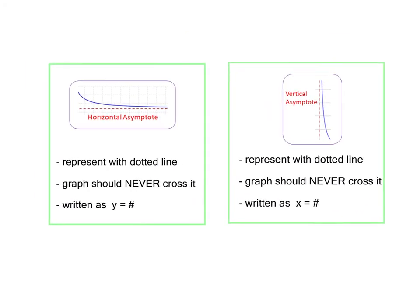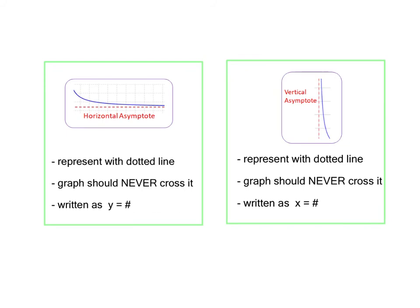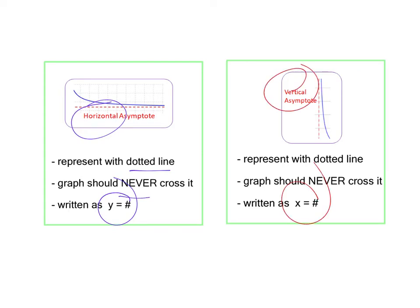Here's a summary: we represent asymptotes with dotted lines — I just highlighted in red on that original graph, but moving forward we should use a dotted line. Graphs should never cross that line. If it's horizontal, it's y equals. If it's vertical, it's x equals.